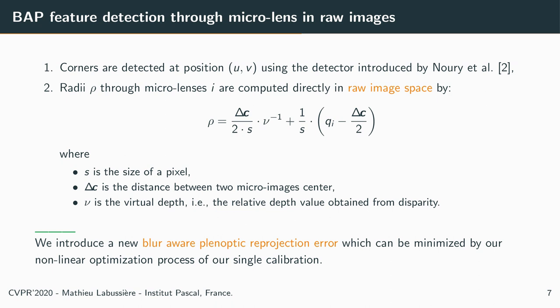Now our feature can be exploited in a calibration process. We introduce a new blur-aware plenoptic reprojection error, which can be minimized by our non-linear optimization process in a single calibration.